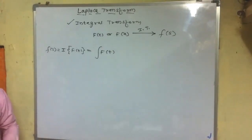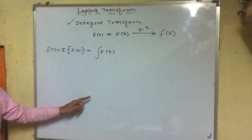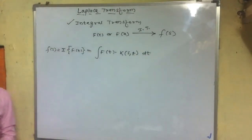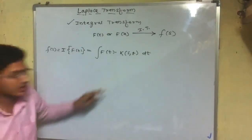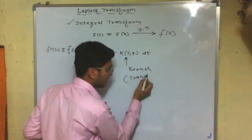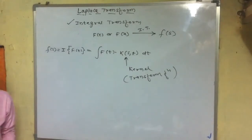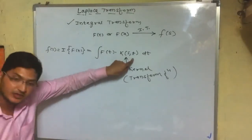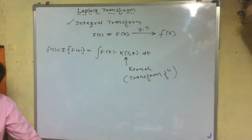We don't only integrate — we also multiply by a transform function. This transform function is called the kernel. We integrate the given function after multiplying it with this kernel. As we keep changing the kernel, we get different types of transforms.